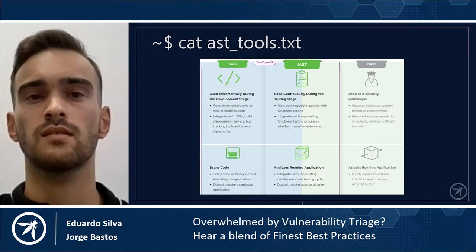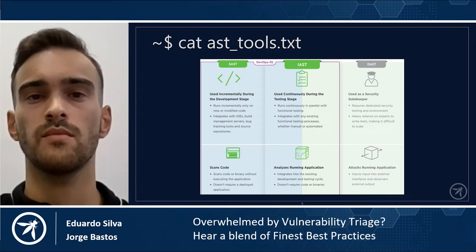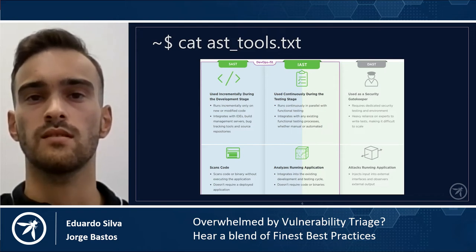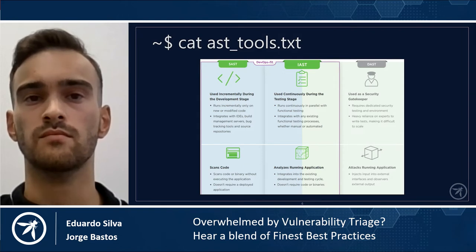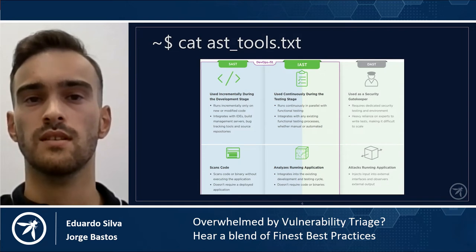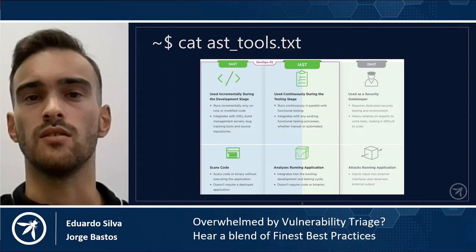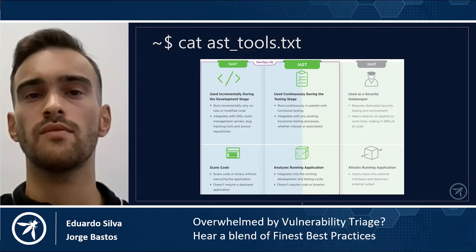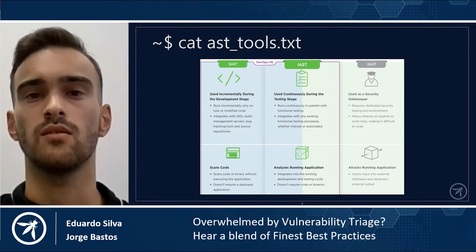Starting with SAST: SAST solutions are considered the best when it comes to integration into the development process. The application code is scanned automatically. Incremental SAST scans are launched with each pull request and vulnerabilities are detected early in the product life cycle. Static analysis can be used not just for security purposes. A SAST tool can be integrated with the IDE as it provides immediate feedback to the developer on issues they might be introducing into the code. Also, it doesn't need to compile the code — you have access to the source code and can even scan parts of the application instead of scanning the whole application.